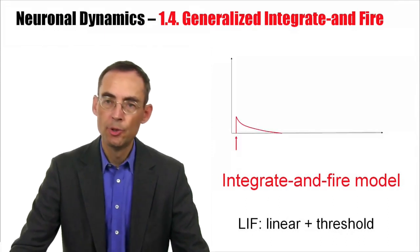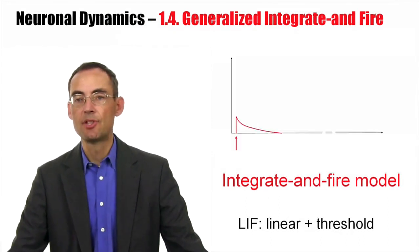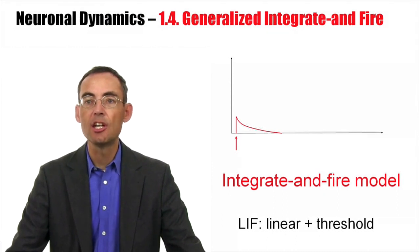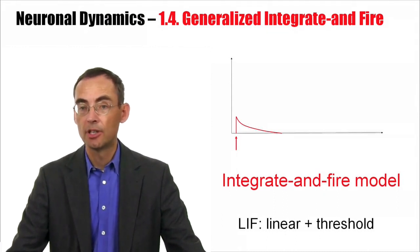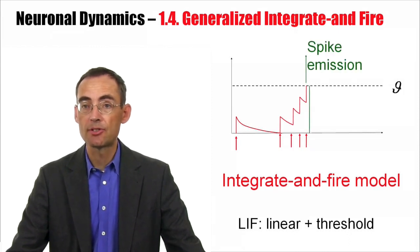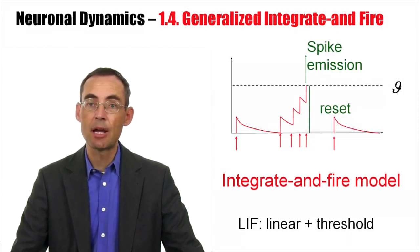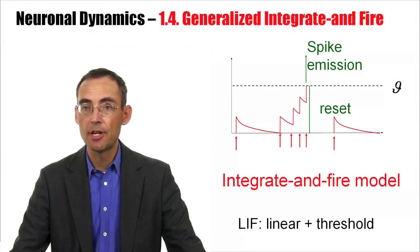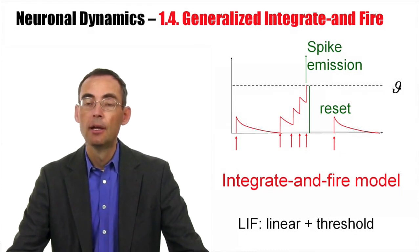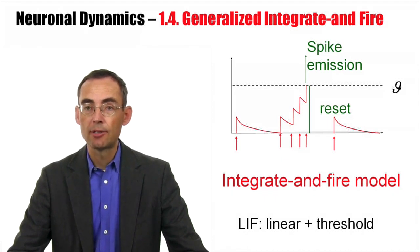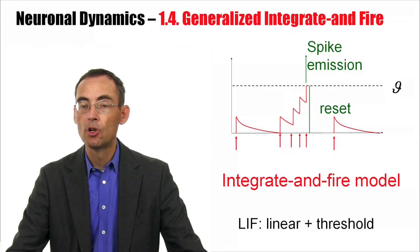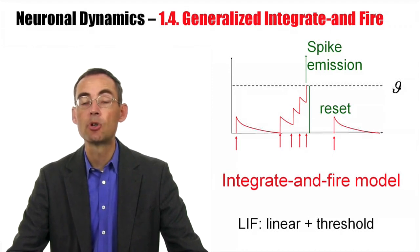Welcome back to the class on Neural Dynamics. This is part 4. In part 3, we discussed the Leaky Integrate-and-Fire model. In that model, everything is linear — incoming pulses cause responses that are summed up linearly. Everything is linear except at the threshold. In this class, I would like to generalize the idea of integrate-and-fire models to the case of non-linear integrate-and-fire models.